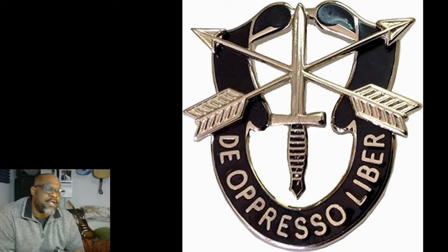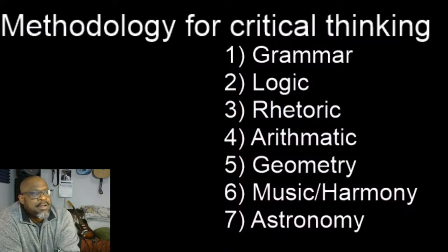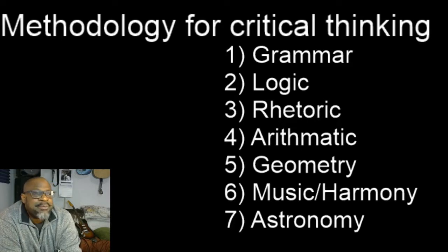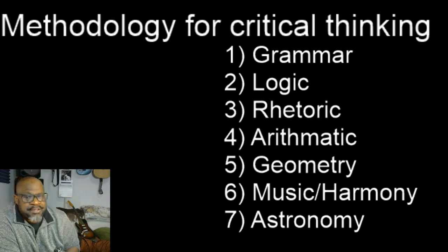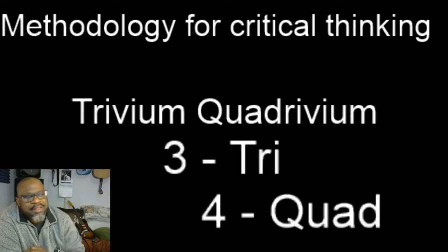So what are the liberal arts, and why are they important to critical thinking? They are grammar, logic, rhetoric, arithmetic, geometry, music, and astronomy. And they must be stated in order in order to be used as a methodology. To facilitate this grouping, we refer to them by their esoteric Latin name, trivium quadrivium. The first three subjects represent the trivium, where the last four subjects represent the quadrivium.